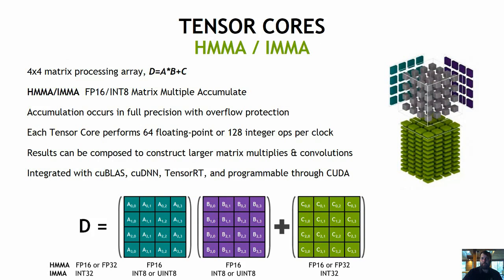Tensor cores implement new floating-point HMMA (half-precision matrix multiply and accumulate) and IMMA (integer matrix multiply and accumulate) instructions for accelerating dense linear algebra computations, signal processing, and deep learning inference. Each Tensor core performs a 4x4 matrix multiply-accumulate operation, and 64 floating-point or 128 integer operations per clock cycle per Tensor core are performed. Results from individual Tensor cores can be composed to construct larger multidimensional matrix multiplies, convolutions, and other similar operations, which is how they end up accelerating DNN inferencing at larger scales. Tensor core support has been pre-integrated into cuBLAS, cuDNN, and TensorRT so they can automatically take advantage of the additional acceleration. Tensor cores are also exposed to programmers at the warp level through extensions to CUDA, using 16x16, 32x8, and 8x32 size matrices.